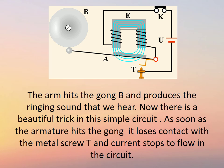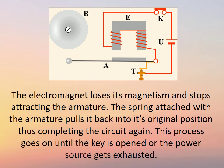Now there is a beautiful trick in this simple circuit. As soon as the armature hits the gong, it loses contact with the metal screw T and current stops flowing in the circuit. The electromagnet loses its magnetism and stops attracting the armature.